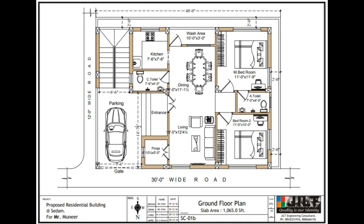Hi everyone, I am Abdul Rahim, welcome to JLD Academy. In this video I'm going to discuss and explain a 2BHK plan. This plan has two faces: north side and east side. On the north side we have a 30 feet road and on the east side we have a small road that is 12 feet. The facing of this plan is north-east.